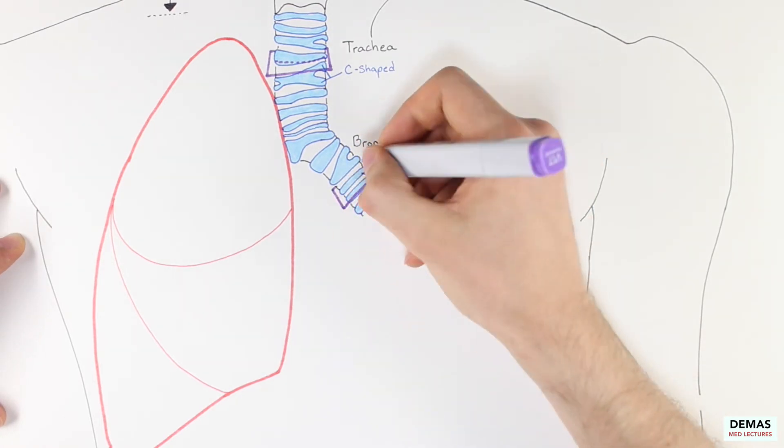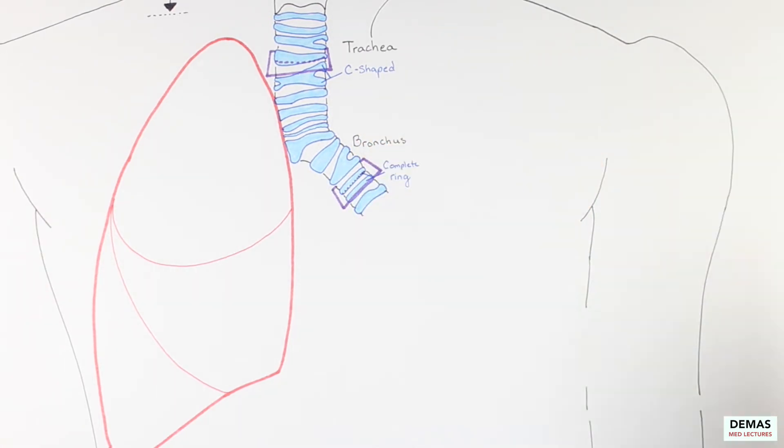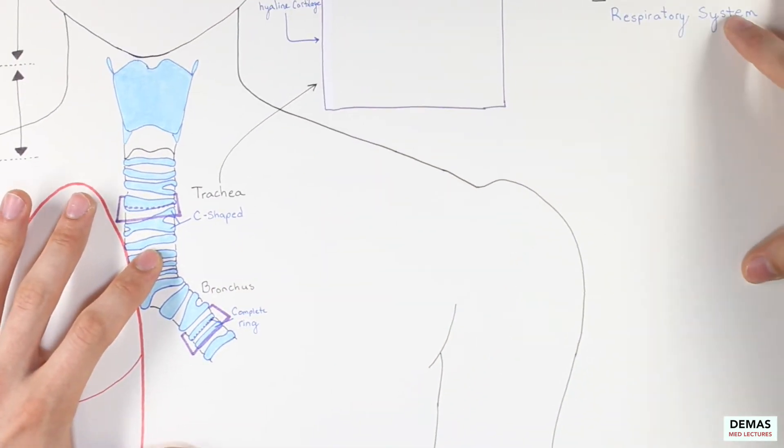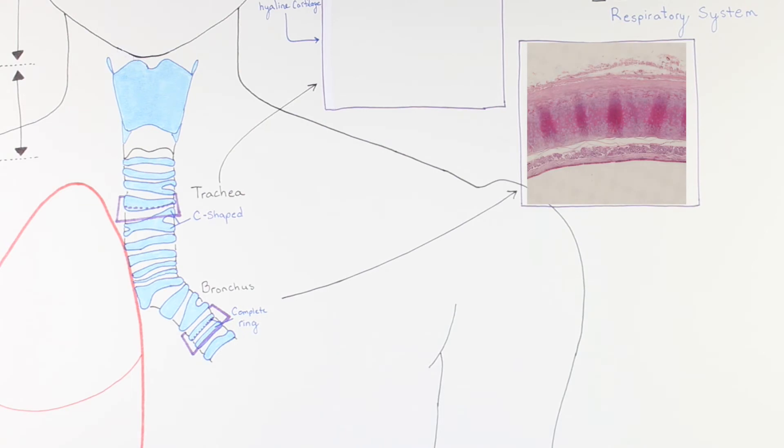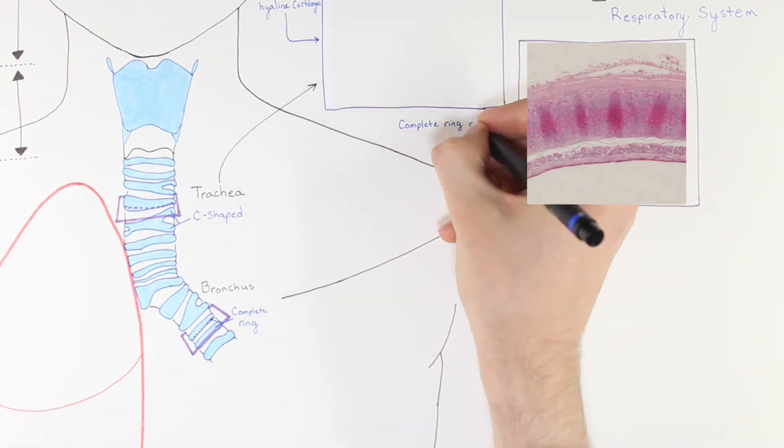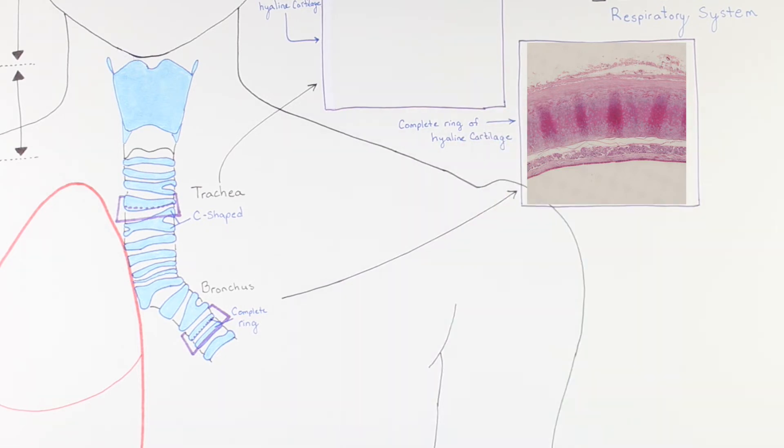Let's go ahead and take a cross-section of the primary bronchus and compare that to the trachea that we saw previously. Notice how the cartilage found in the bronchus is a continuous ring of hyaline cartilage unlike the c-shaped cartilage found in the trachea.